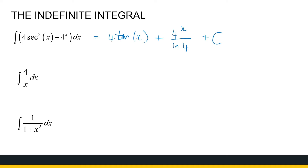What about 4 over x? Remember that 4 is just a constant, so that's the same as 4 times the integral of 1 over x dx. You do not have to write it like that, but that is the same, and that gives 4·ln|x|.